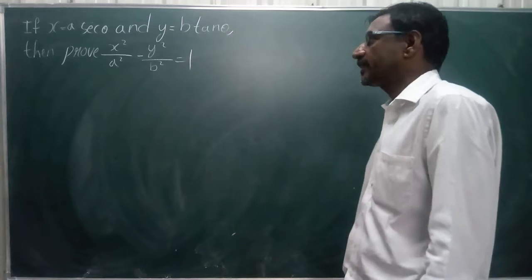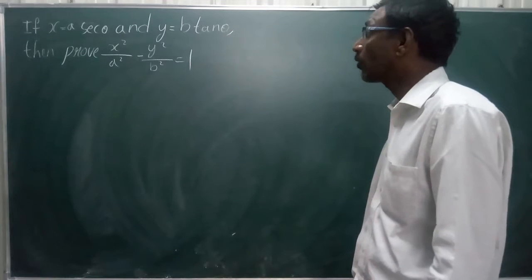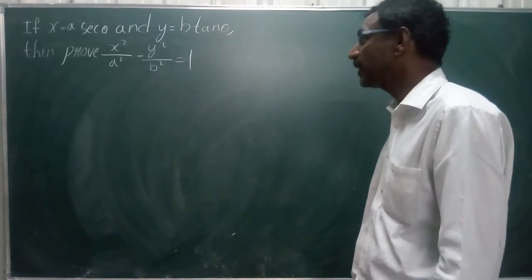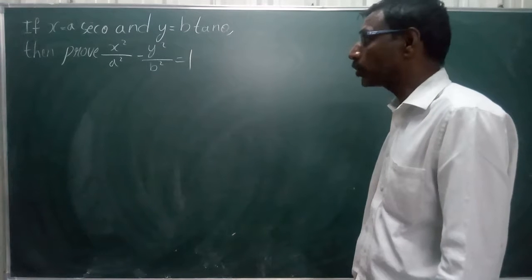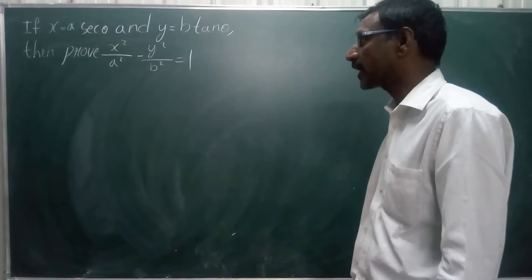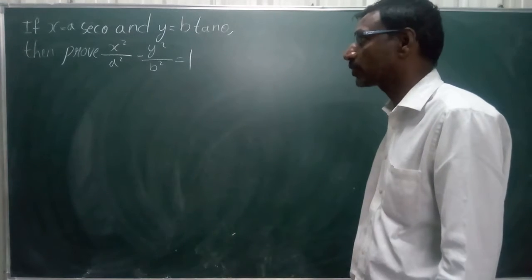If x is equal to a sec theta and y is equal to b tan theta, prove that x square by a square minus y square by b square equals to 1.